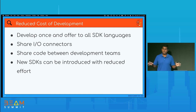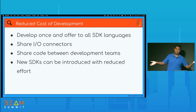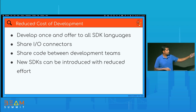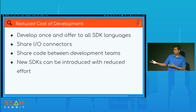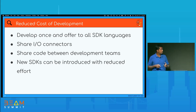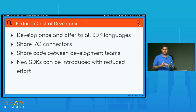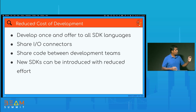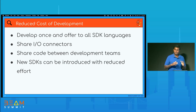You can prevent that by maintaining one core implementation and offering it to all SDKs. This is especially important for IO connectors, which are some of the most complex transforms in Beam. If you have a large development team using different languages — say a Python sub-team and a Java sub-team — they can share code more easily. The Python team can develop a transform and share it with the Java team to use in their Java pipeline, and vice versa. It's also much less effort to introduce new SDKs, since you don't have to add new IO connectors or core transforms.